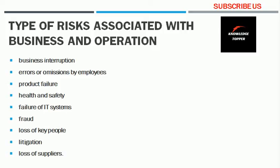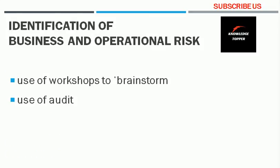There are many important steps used in the identification of business and operational risk, but the most important methods are these two. The first is the use of workshops to brainstorm. This type of identification method can be used at different levels of the organization and can identify a large number of risks in a shorter period of time. The main purpose is to keep ideas flowing, and it is important to keep identification sessions focused on identifying risk and not to move on to evaluating the risk.